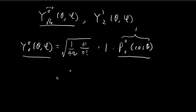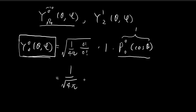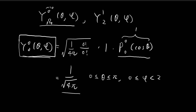So in the end, your function Y₀⁰ is just equal to 1 over the square root of 4π. This is valid for θ between 0 and π, and φ between 0 and 2π.